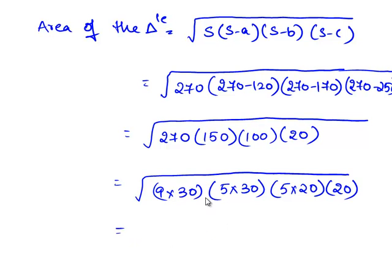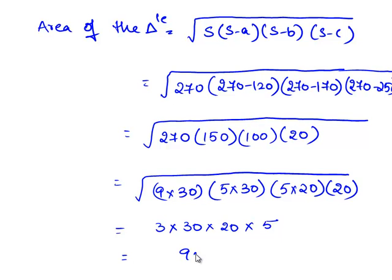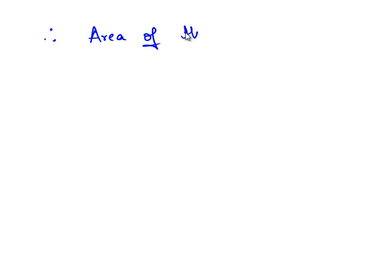This simplifies as follows: 9 equals 3 times 3, that is 3 squared, so we bring out 3 from the square root. 30 times 30 is 30 squared, so we bring out 30. 20 times 20 is 20 squared, so we bring out 20. And 5 times 5 is 5 squared, so we bring out 5. Therefore, it is 3 times 3 times 30 times 20 times 5, which is equal to 9,000 cm squared. Therefore, the area of the triangle is equal to 9,000 cm squared.